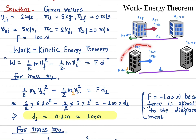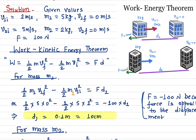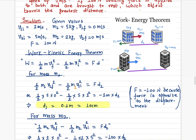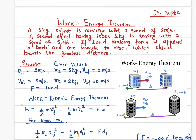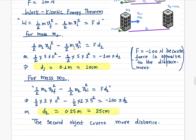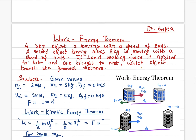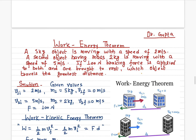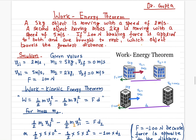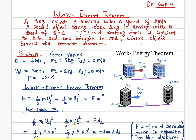The second object traveled a greater distance because it had more kinetic energy than the first object. That's the work-energy theorem applied to this problem. Keep practicing and you'll get there. If you have any questions, write them in the comment section below, and don't forget to like, share, and subscribe. Thank you very much.